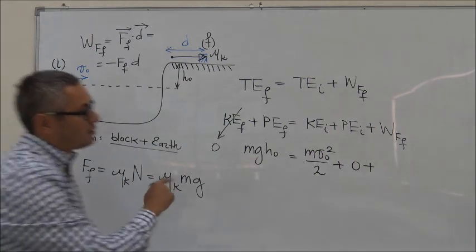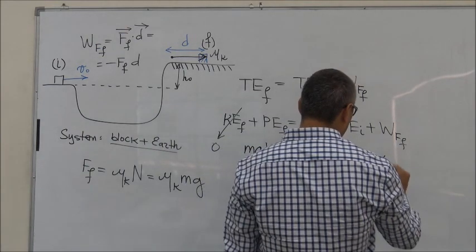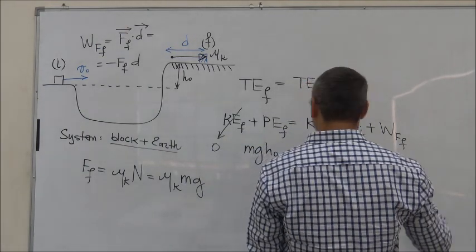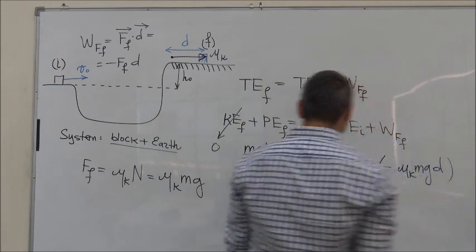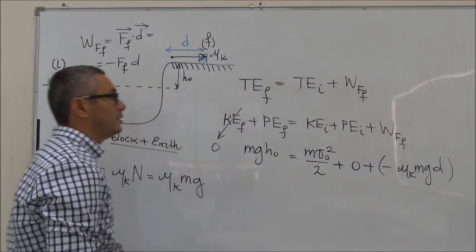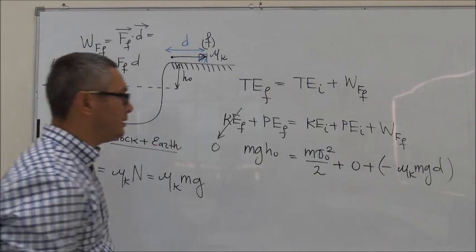So we can now substitute it in here. We have minus mu k mg D. So now we are ready to calculate for distance d.